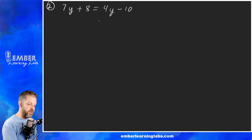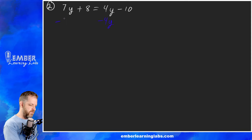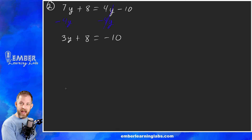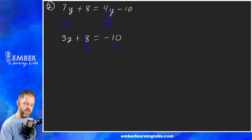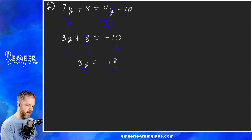We subtract 4y on both sides. If it were negative 4y, we would add 4y — we always do the opposite to move it and get rid of it. Those 4y terms cancel, leaving us with 3y on the left side. Plus 8 equals negative 10. The 8 is added, so we subtract 8 on both sides: 3y equals negative 18.